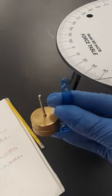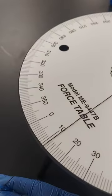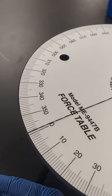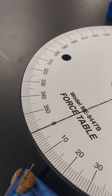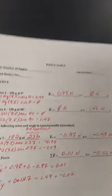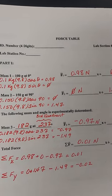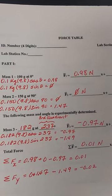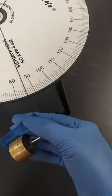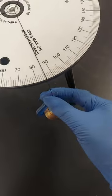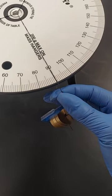Mass two is 150 grams at 90 degrees. So I have 150 grams on this mass hanger and I'm going to move it to 90 degrees.